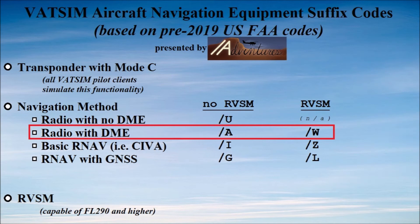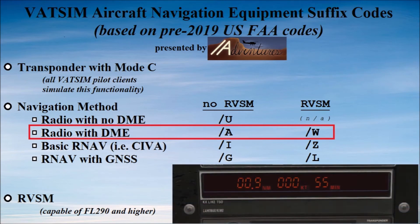If your aircraft has distance measuring equipment, or DME, you have a readout of how far your tuned-in navigation station is. It might be in a separate box or within another electronic display. If you have a mileage countdown somewhere, you have DME. Radio-based navigation without RNAV capability means you're Slant Alpha if you're limited below flight level 290, or Slant Whiskey if you're capable of flying at or above that altitude but don't have RNAV equipment, like a vintage airliner. That's the type of navigation we focus on in this channel, with a few notable exceptions.